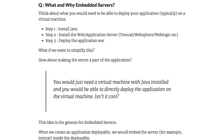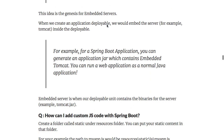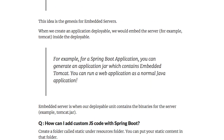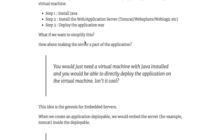What are embedded servers and why do we need them? Typically, when deploying an application onto a virtual machine, you need to install Java, then install a web or application server like Tomcat, WebSphere, or WebLogic, and then deploy the application WAR. With embedded servers, the server itself — whether Tomcat, Jetty, or Undertow — is included as part of the application jar. This simplifies deployment to just two steps: install Java and run the application.